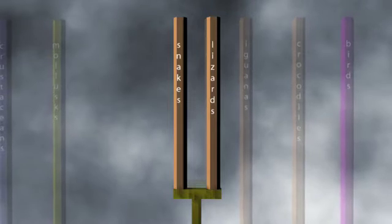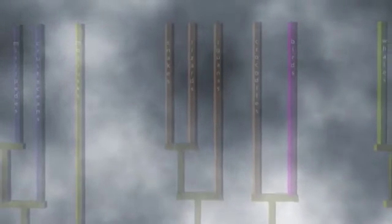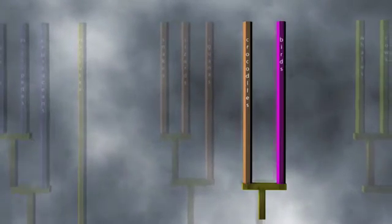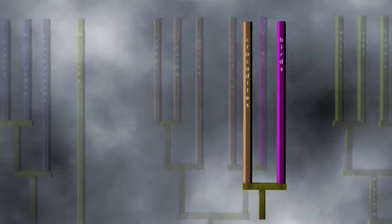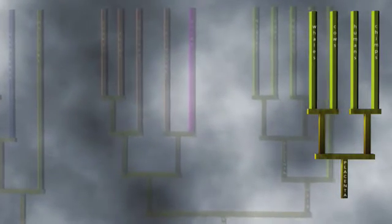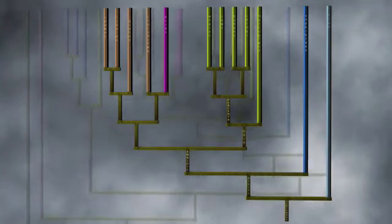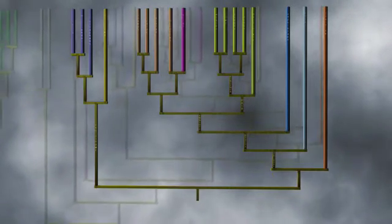Species are essentially never found that combine characteristics of different groupings. For example, snakes and lizards are never found with feathers — only birds have feathers. Birds and crocodiles are never found with differentiated teeth. Only non-marsupial mammals have a placenta. Birds and mollusks are never found with placenta. Only mammals have hair and mammary glands. Amniotic eggs are never found in fish or arthropods. The consistency of nested hierarchies is another success for common descent.